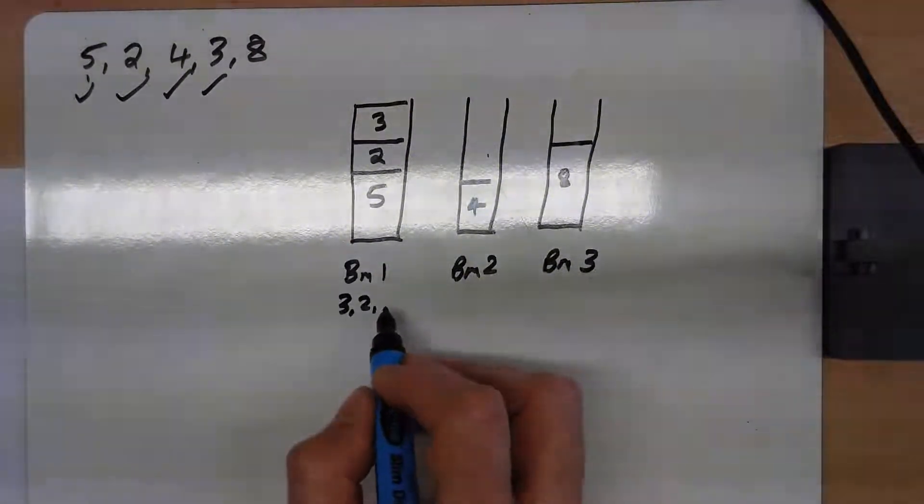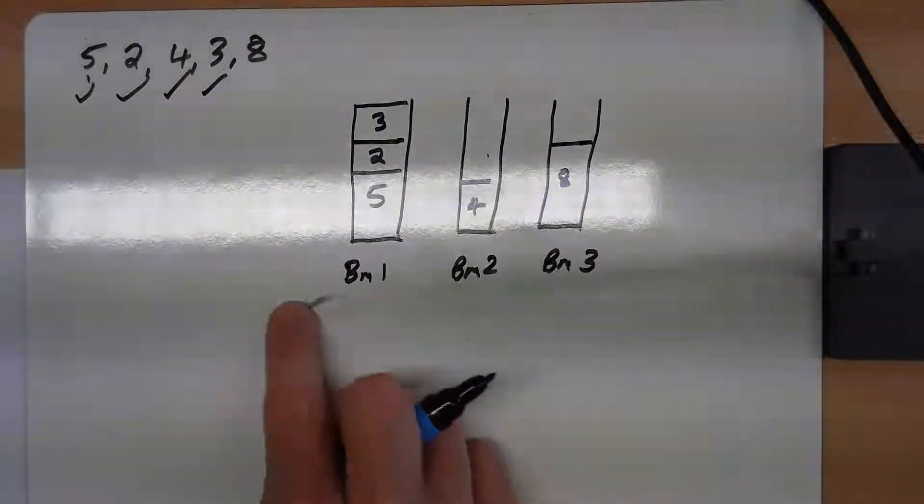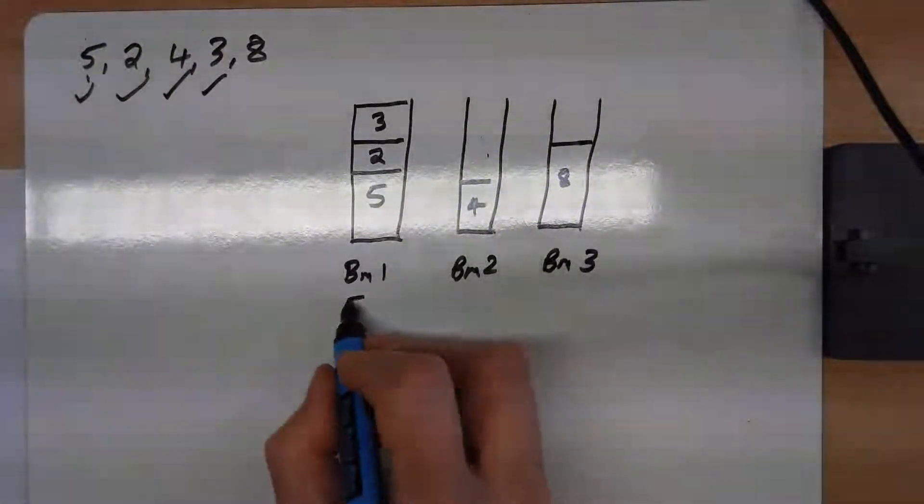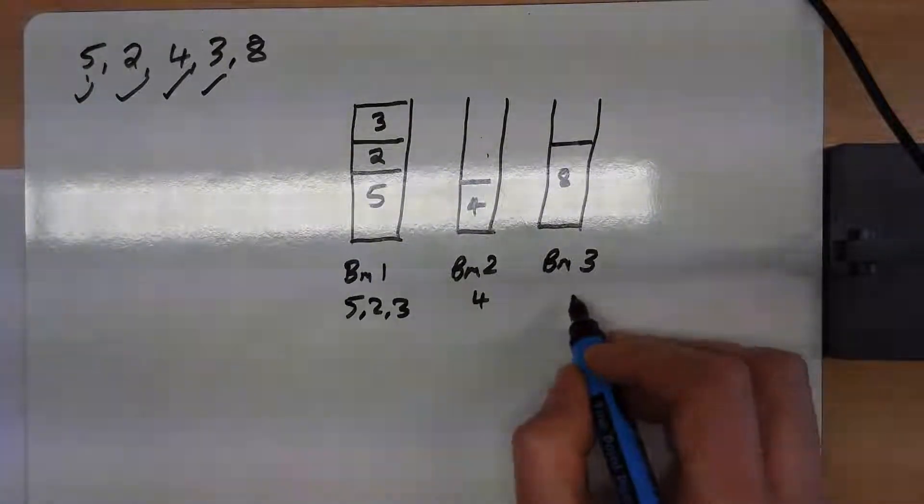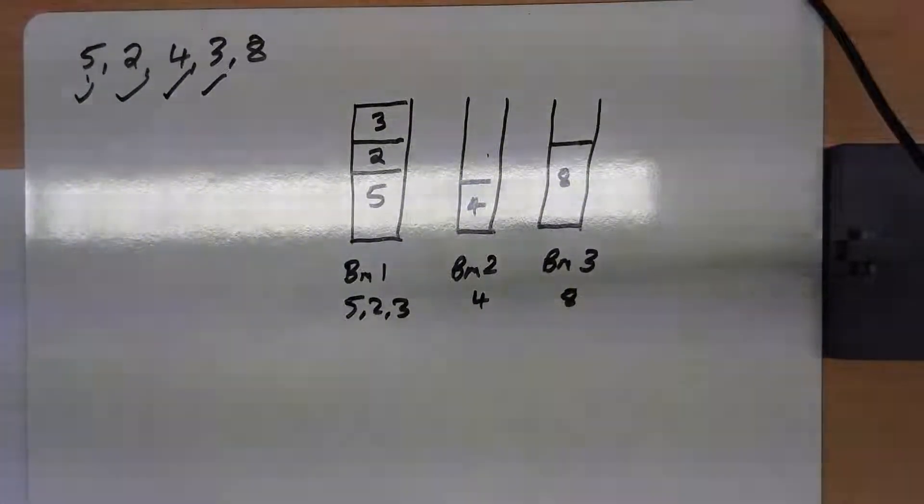Let's put this in the right order: bin 1 has 5, 2, and 3. Bin 2 is just a 4, and bin 3 is just an 8.